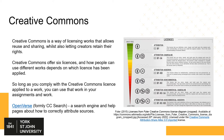So long as you comply with the Creative Commons licence applied to a work, you can use that work in your own assignments. When looking for resources licensed under a Creative Commons licence, you might want to consider Openverse, a search engine for resources with Creative Commons licences. It also has links to help pages which explain how to correctly attribute works. An example of an image licensed under a Creative Commons licence is on this slide — a diagram showing the different Creative Commons licences. This image is licensed under a Creative Commons Attribution Share Alike licence, so I'm free to use it so long as I acknowledge the creator, which I have done by referencing the image.